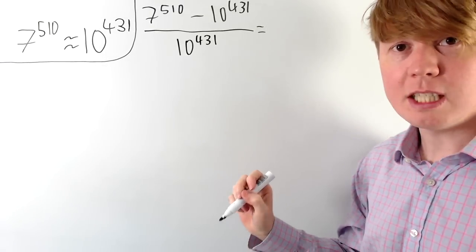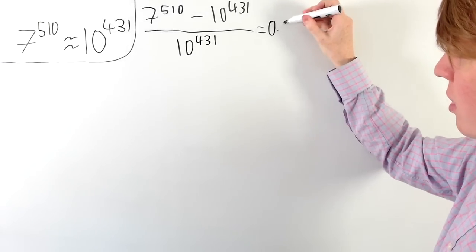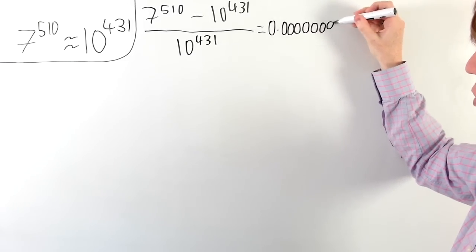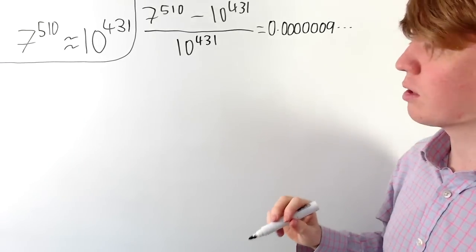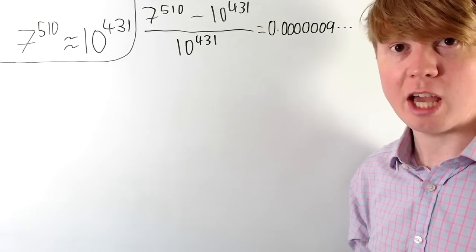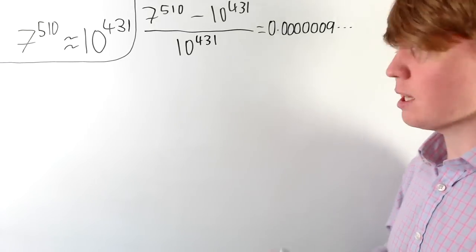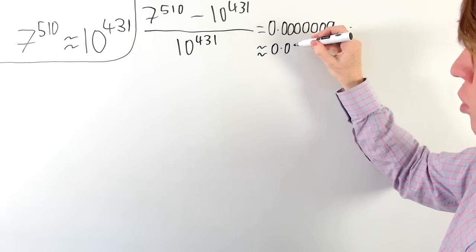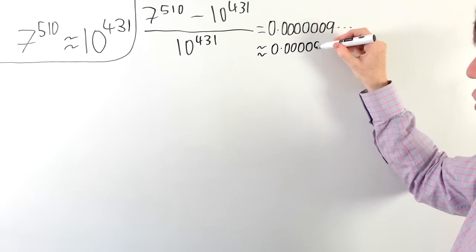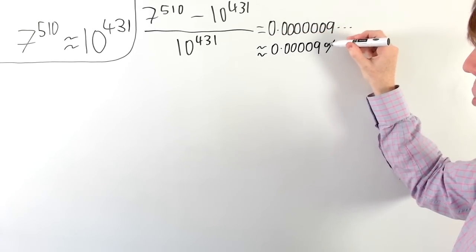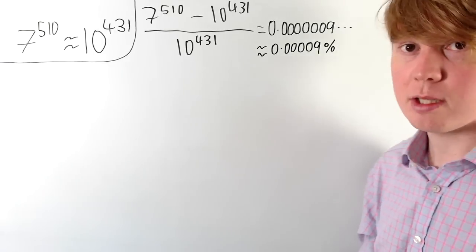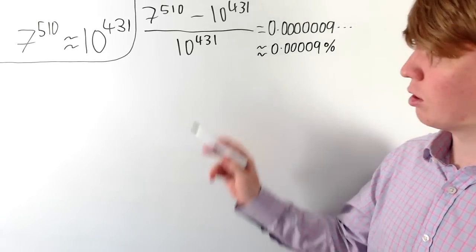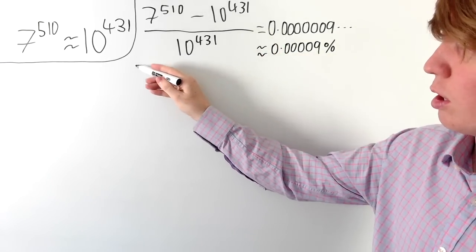As a decimal, we get 0.0000009, followed by some more digits, for our percentage error. To turn this into a percentage, this is approximately equal to 0.00009%. So you can see, in terms of percentage error, this is actually a really good approximation for 10 to the power of 431.